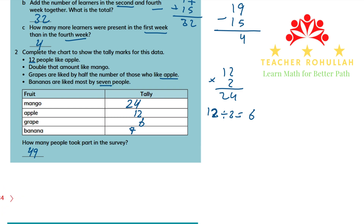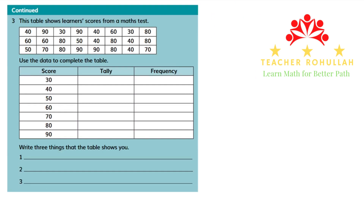We are done with question 2. Let me scroll down to question 3. In this question it says: this table shows learners' scores from the math test. The scores are 30, 40, 50, 60, 70, 80, and 90. It says: use the data to complete the table. We can complete this table by recording the data given here in the tally chart.